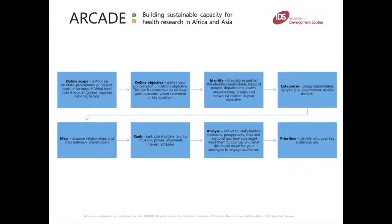Once you've mapped your stakeholders, it's then important to rank them — in terms of their influence, their power, and their alignment, interest and attitude to your specific issue or policy engagement objective. Once you've done this, it's important to analyse and reflect on stakeholder positions, perspectives, links and relationships and importantly how you might want them to change and what this might mean for your strategies to engage these audiences. And finally, to prioritise who your key audiences are.